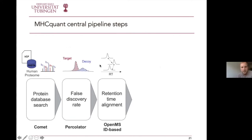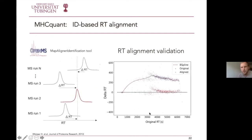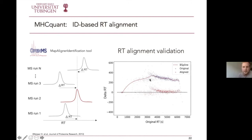The next step corrects retention time across all peptides. A known problem in mass spectrometry is that across different measurements, retention times slightly deviate. This is corrected in the pipeline using an OpenMS tool called MapAligner Identification, which aligns all peptides to one central reference. We verified this by looking at two very different MS runs, and the deviation was corrected to nearly zero across the entire retention time range after applying this tool.